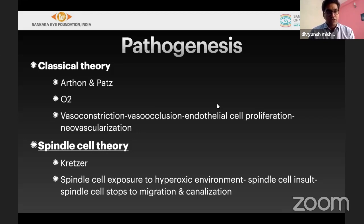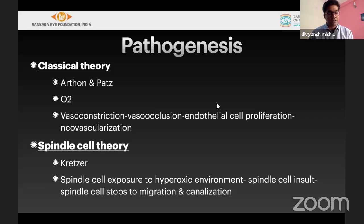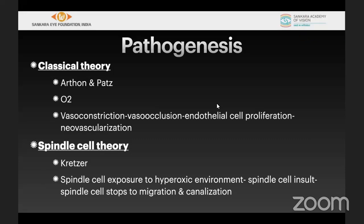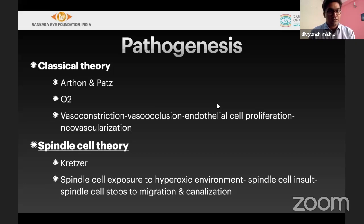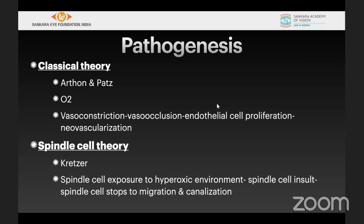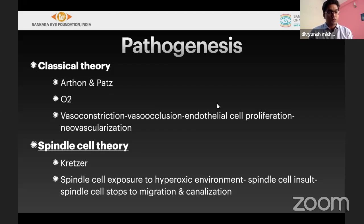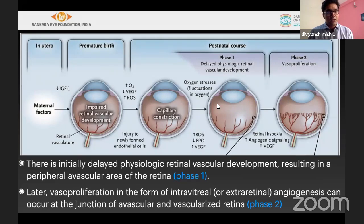The classical pathogenesis described by Artson and Pats is the oxygen-associated pathogenesis, where vasoconstriction causes vasoocclusion, which causes endothelial cell proliferation and then neovascularization. The other theory is the spindle cell theory proposed by Keds, where spindle cells exposed to a hyperoxic environment are insulted and their migration is stopped. This is how ROP occurs.